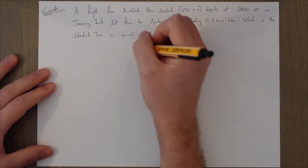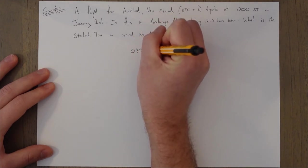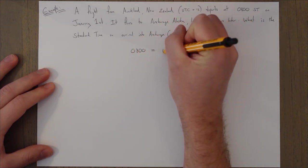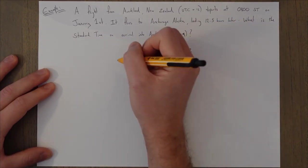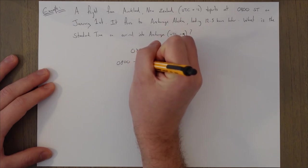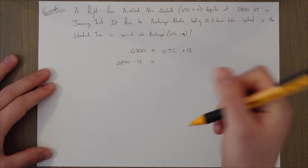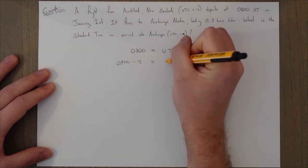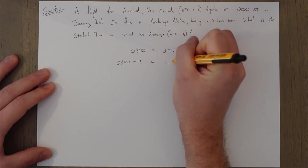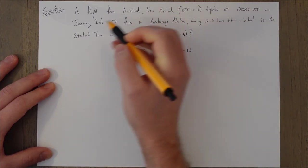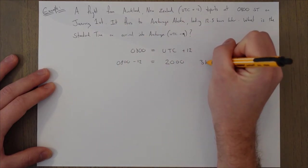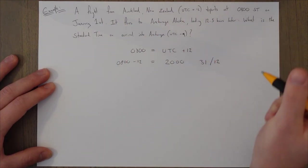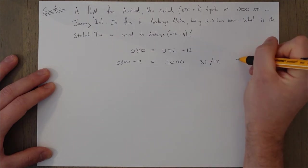So 0800 standard time equals UTC plus 12. That's the time zone we're in. So 0800 minus 12 is going to be 12 hours previous and it's going to be 8pm but the day before. So it's January the 1st but it's actually going to be the 31st of December. That's when we depart in terms of Zulu time.